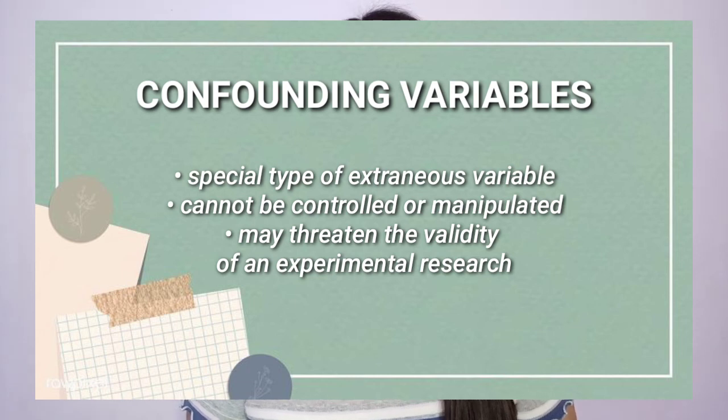Moreover, we have the so-called confounding variable, which is a special type of extraneous variable that the researcher cannot control or manipulate and may threaten the validity of an experimental research. For instance, the experimental group UMES-12 Canada scored higher. Watching the video lesson may have helped them understand the lessons better, but we also cannot deny that the students in the experimental group may simply have a higher IQ than those in the control group — and that could be considered a confounding variable.